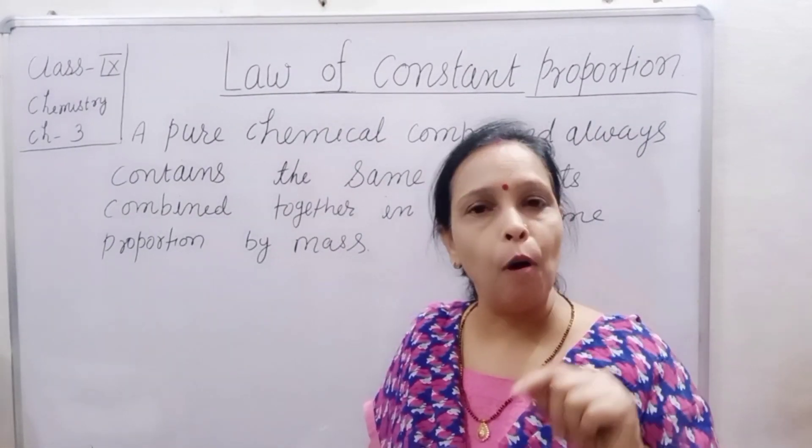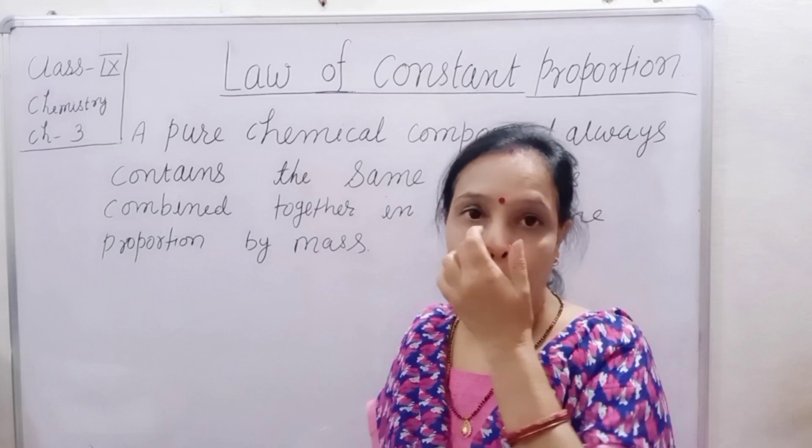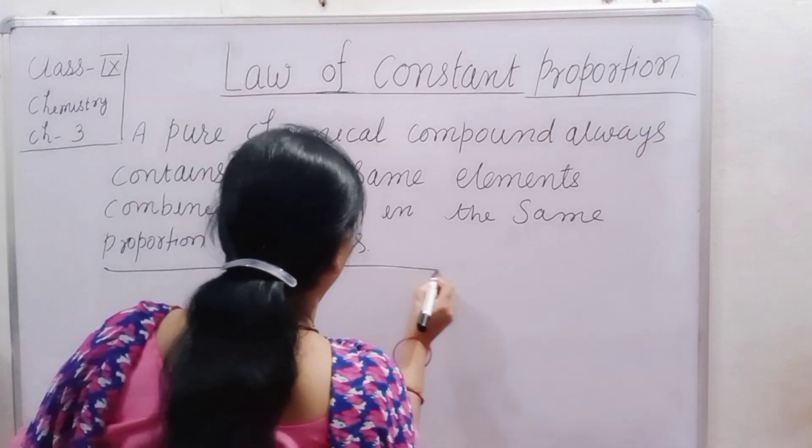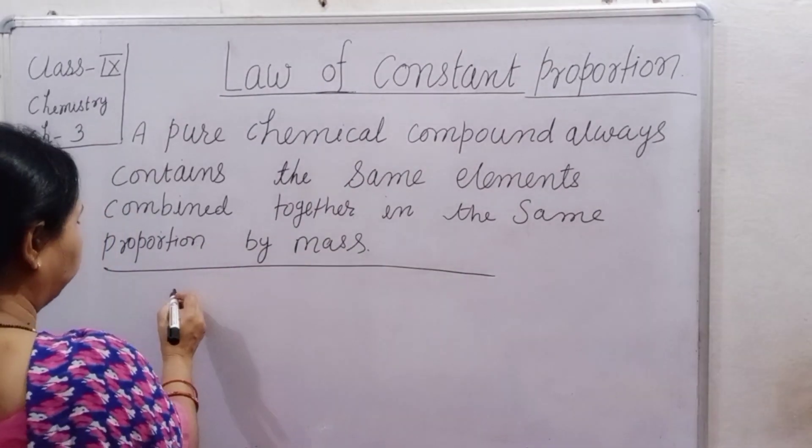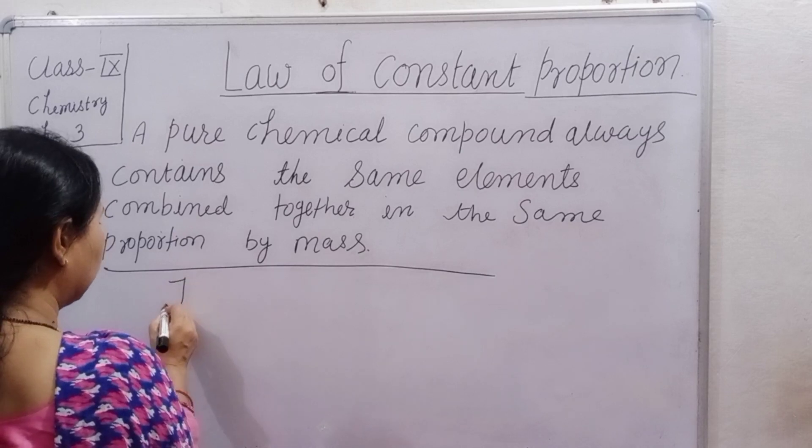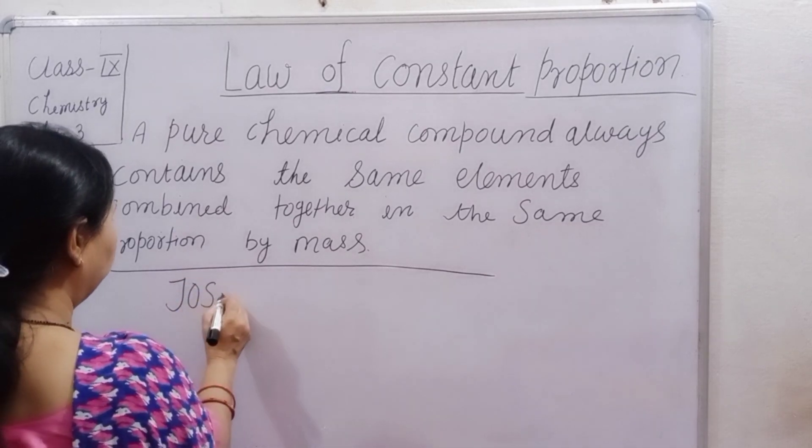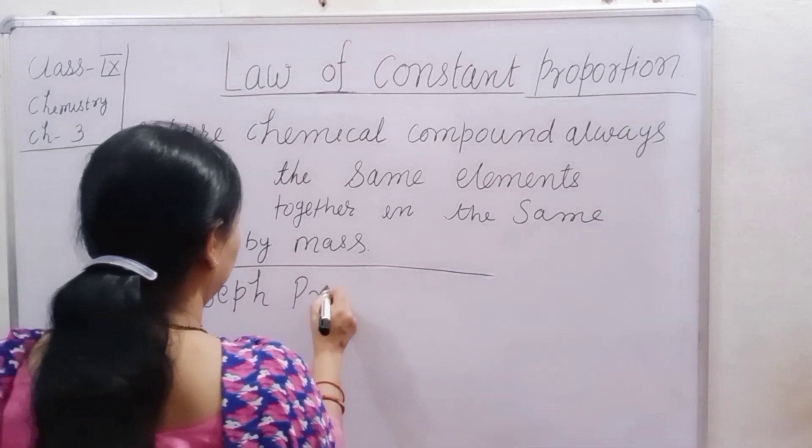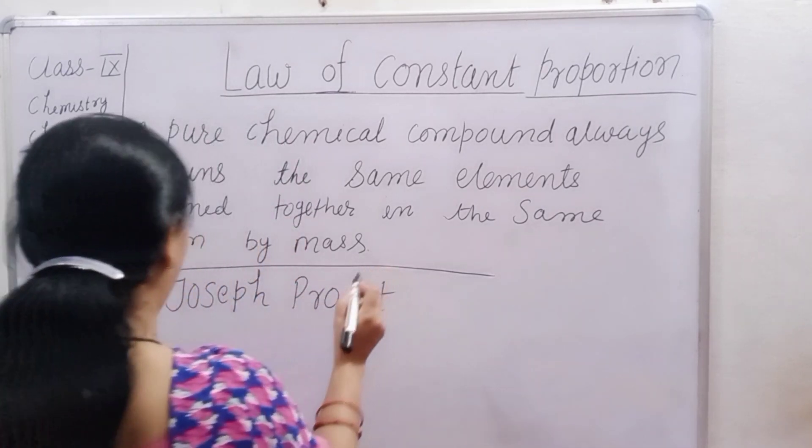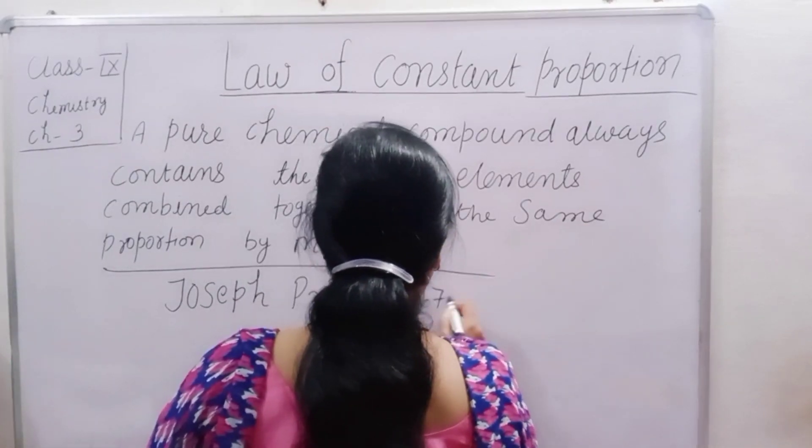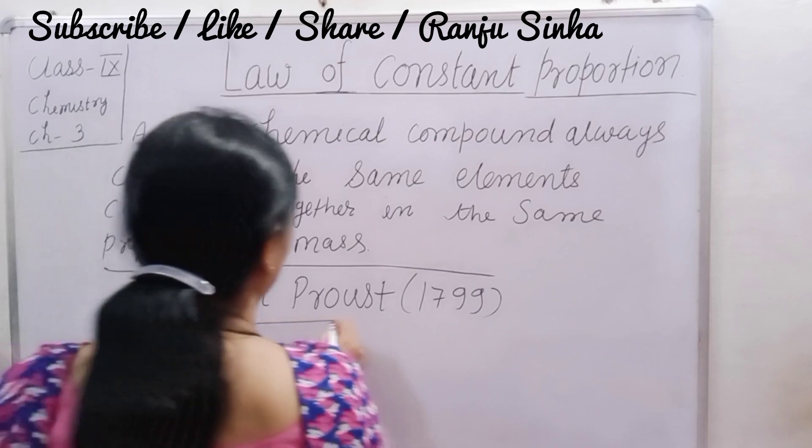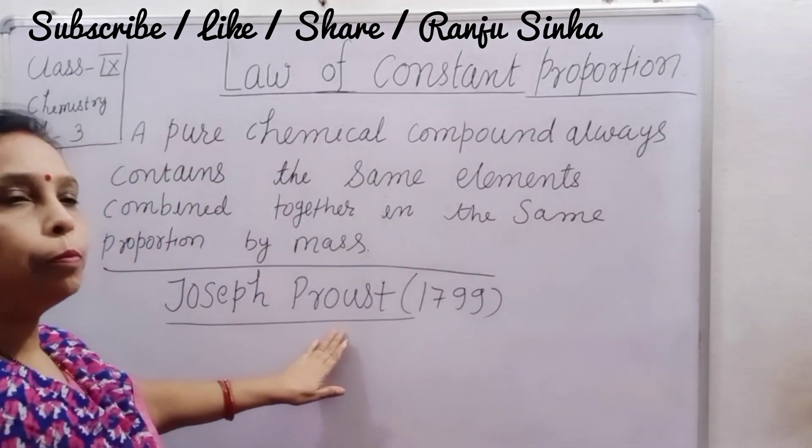First, name of scientist who discovered this law. Name of scientist is Joseph Proust. First note it. Name of scientist is Joseph Proust in 1799 who discovered law of constant proportion.